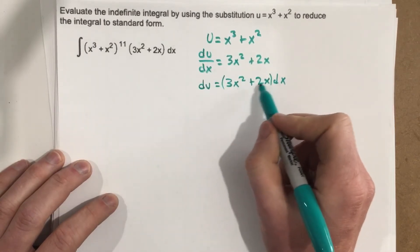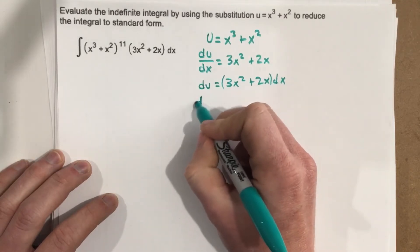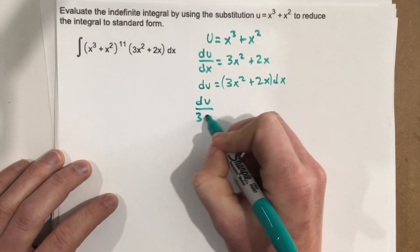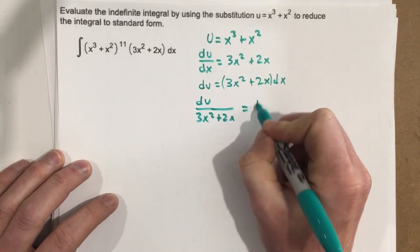So we get du over 3x squared plus 2x equals dx.